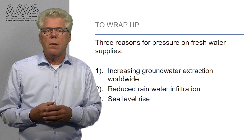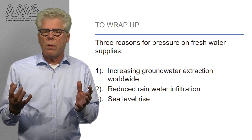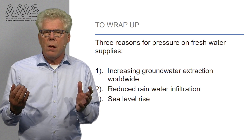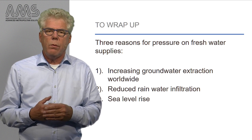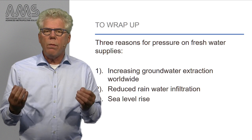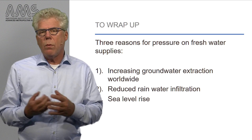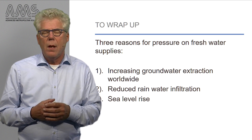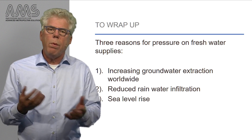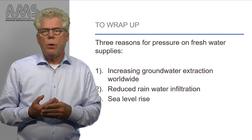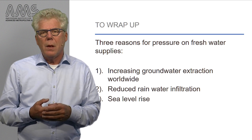The three factors are: increasing groundwater extraction, reduced rainwater infiltration, and sea level rise driving salt water intrusion — all of which put groundwater resources at risk. In conclusion, delta cities have to cope with reduced freshwater availability. Do you have any ideas how to solve this problem?